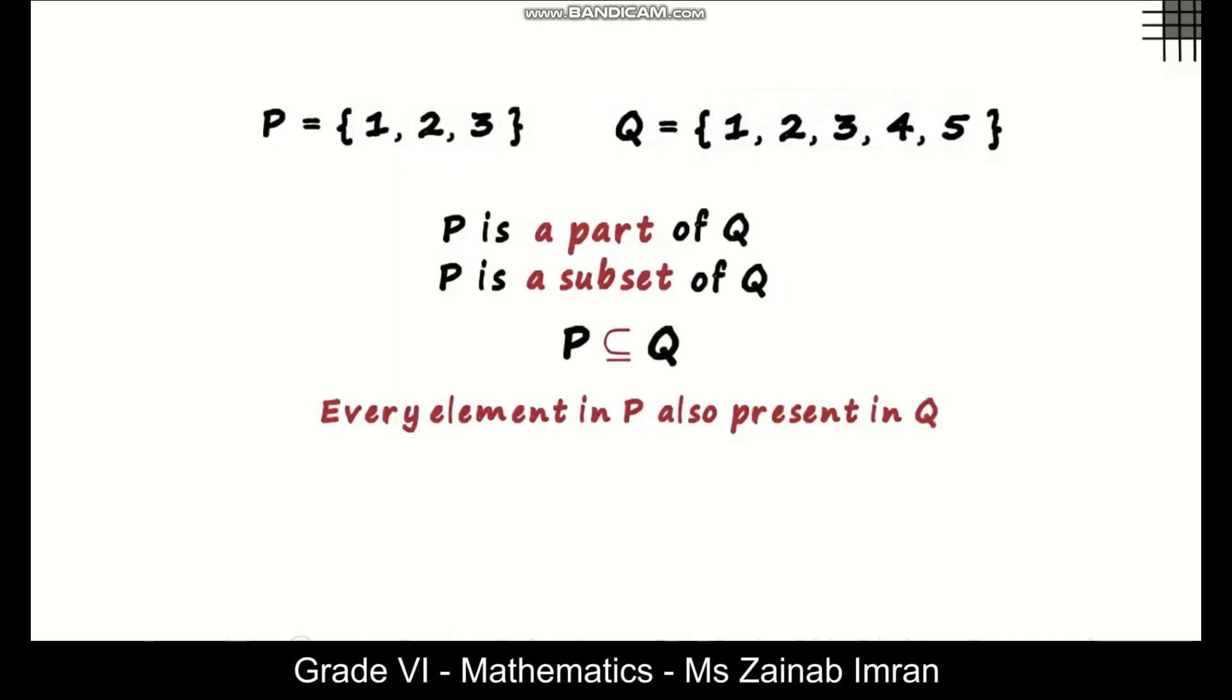But this statement raises a new query. Look at sets C and D. Set C has 4, 5 and 6 as its elements. And set D has 4, 6 and 5 as its elements. Both the sets have the same elements which makes them equal.